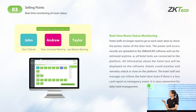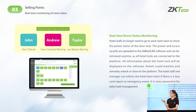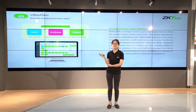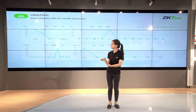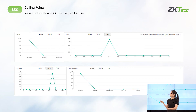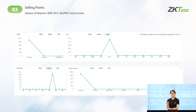Next is the real-time monitoring of room status. You can easily notice abnormal room status through our platform and take immediate action — for example, if the battery is low, you can ask your employee to replace it in time. Also very important is the reporting feature, which shows hotel performance through various reports like ADR, occupancy rate, and total income of the hotel.